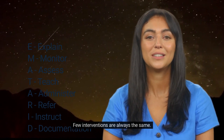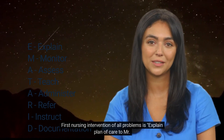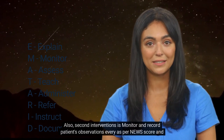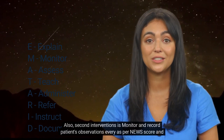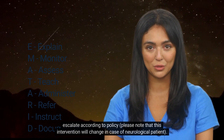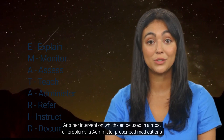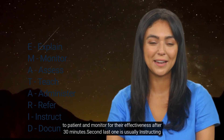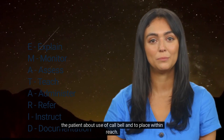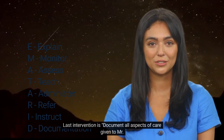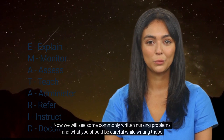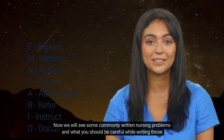A few interventions are always the same. The first nursing intervention for all problems is: explain plan of care to Mr. X and gain consent for all interventions. The second is: monitor and record patient's observations every as per NEWS score, and escalate according to policy. Note this intervention changes for neurological patients. Another common intervention is: administer prescribed medications to patient and monitor for their effectiveness after 30 minutes. Near the end, instruct the patient about use of the call bell and place it within reach. Finally: document all aspects of care given to Mr. X.